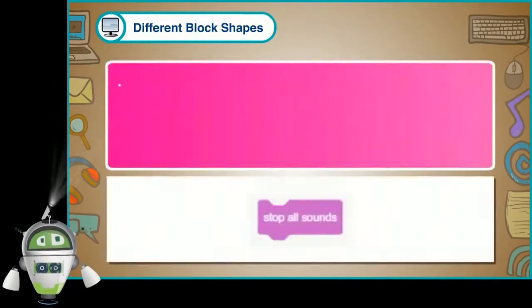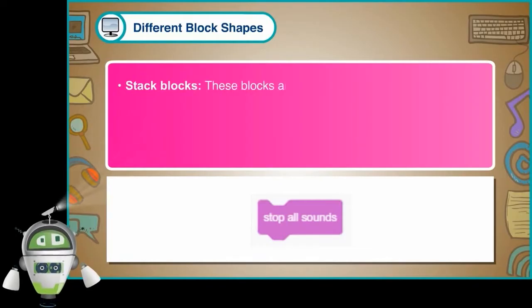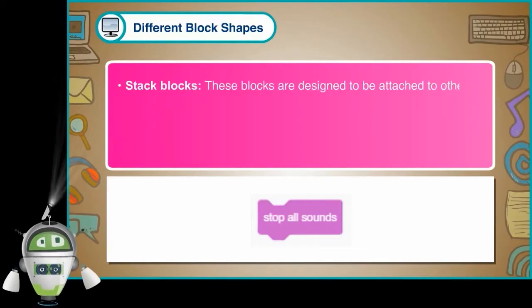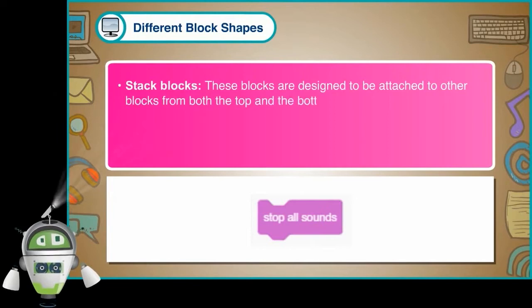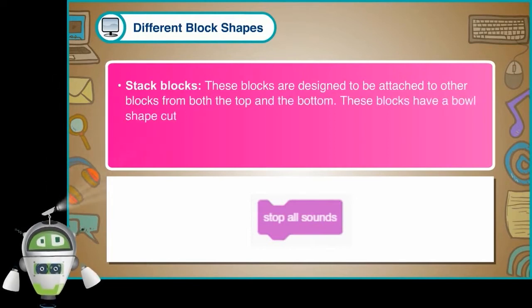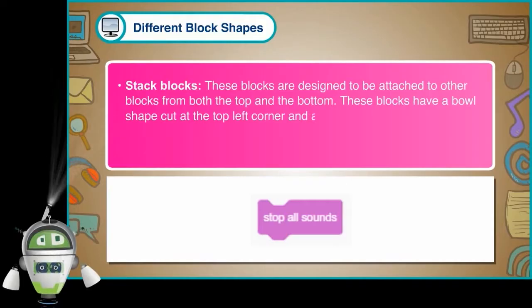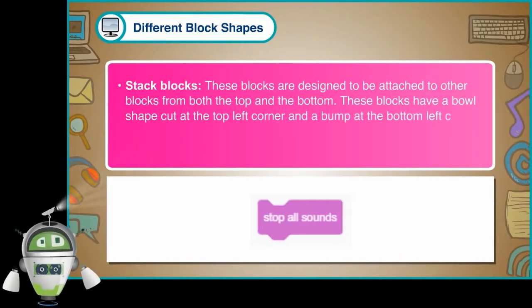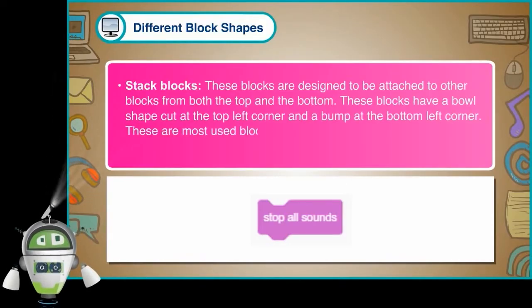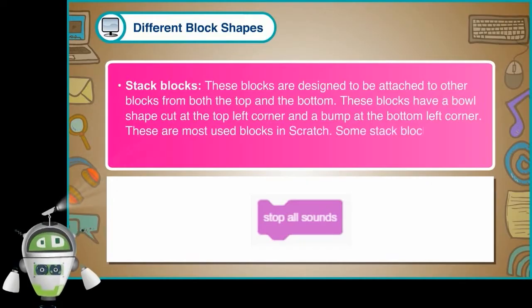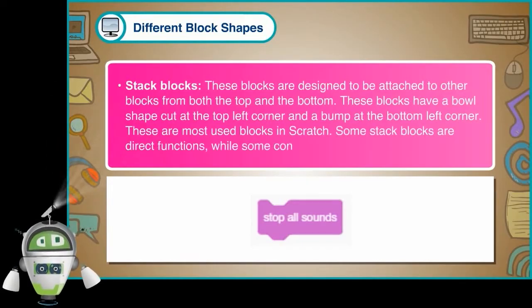Stack Blocks: These blocks are designed to be attached to other blocks from both the top and the bottom. These blocks have a bowl-shaped cut at the top left corner and a bump at the bottom left corner. These are the most used blocks in Scratch. Some stack blocks are direct functions, while some contain values that can be changed.